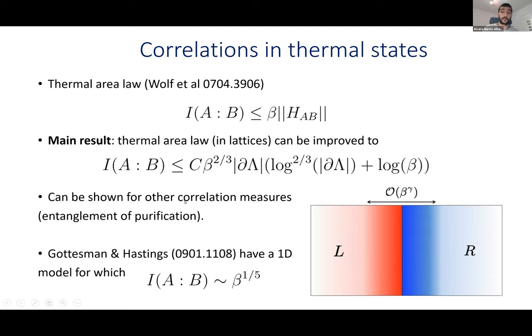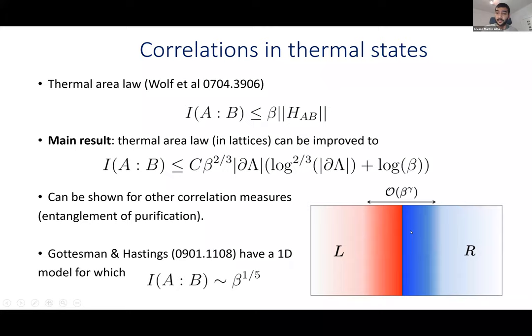We also have a similar area law for other measures of correlations, in particular for something called the entanglement of purification. Intuitively, this means that if you look at the lattice there's a region along the boundary between A and B that scales like β^γ where γ = 2/3 — the correlations between the left and right sides are clustered around an area of this size. This is relatively close to optimal: there's an example by Gottesman-Hastings where a 1D model has mutual information scaling like β^(1/5) in a certain parameter range. So we've improved from exponent 1 down toward 1/5, currently sitting at 2/3.